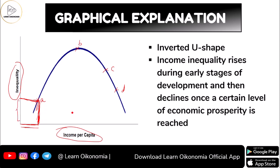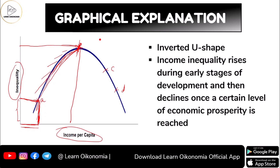Initially at point A, the nation has a certain level of economic development and a corresponding level of inequality. As time progresses, we can see that inequality is increasing — the curve is positively sloped — showing a direct relationship between income inequality and development up to a maximum point.